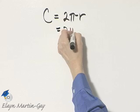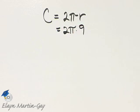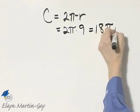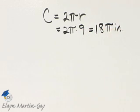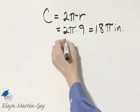So for this circle, it would be 2 times pi and the radius is 9. So the circumference is 18 pi, and we are in inches. That is the exact distance around the circle.